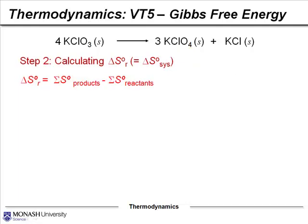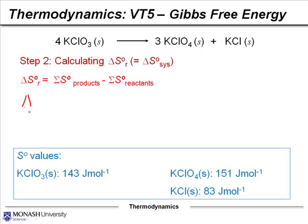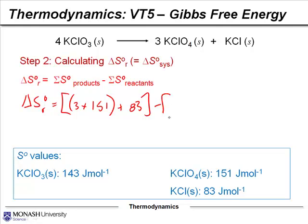Moving on to the entropy side: since these are state functions, we add together the entropy of our products and subtract the entropy of our reactants. Substituting the values — paying careful attention to the stoichiometric coefficients — we get ΔS° for the reaction equal to approximately −36 joules per kelvin per mole. Note that the units here are joules per kelvin per mole, not kilojoules.